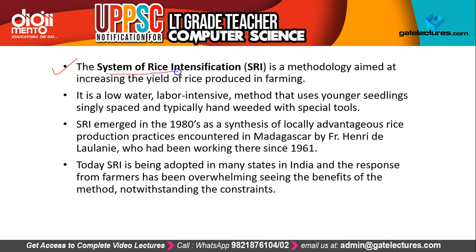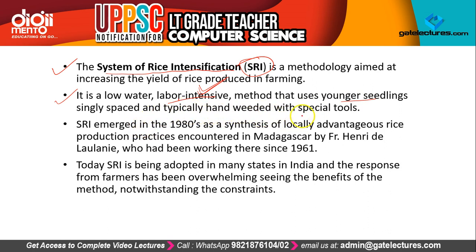SRI is a low-water, labor-intensive method that uses younger seedlings, singly spaced, and typically hand-weeded with special tools. It is a methodology aimed at increasing the yield of rice produced in farming.